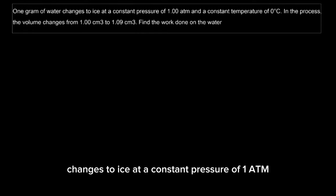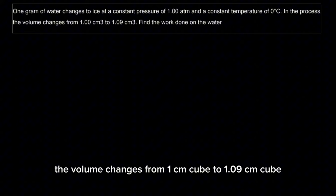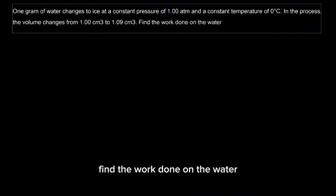One gram of water changes to ice at a constant pressure of 1 atm and a constant temperature of 0 degrees Celsius. In the process, the volume changes from 1 centimeter cube to 1.09 centimeter cube. Find the work done on the water.